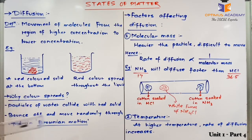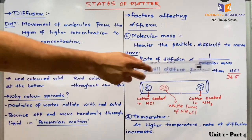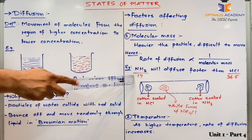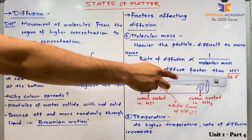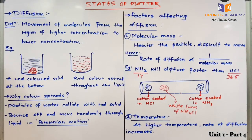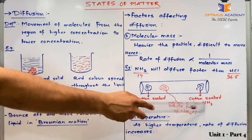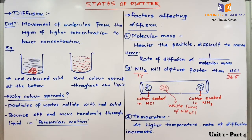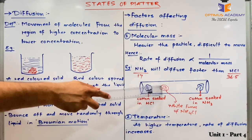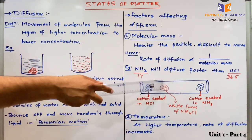To explain this, we take the example of NH3 (ammonia) and HCl. Ammonia has a molecular mass of 17, whereas HCl has a molecular mass of 36.5 — HCl is heavier than ammonia. So in a given time, HCl will move a lesser distance compared to ammonia. If we take two cotton swabs — one soaked in HCl and another in NH3 — HCl will cover less distance while ammonia will cover a longer distance.